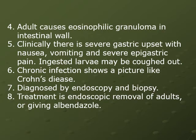If men eat undercooked fish, they can also get the infection. The adult worm at the larval stages settles under the mucosa of the stomach or cecum and colon. The adult causes an eosinophilic granuloma in the intestinal wall. Clinically there is severe gastric upset with nausea, vomiting, and severe epigastric pain. Ingested larvae may be cut out while migrating after penetration of the intestine. Chronic infection shows a picture like Crohn's disease in the colon, and it is diagnosed by endoscopy and biopsy.